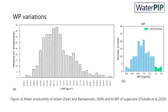The frequency distribution of water productivity shows there is huge potential to improve water productivity. In the figures, the left shows the water productivity of wheat and the right shows the distribution of water productivity of sugarcane within the same scheme. So even within the same scheme and environment, there is variation of water productivity and hence scope to improve it.